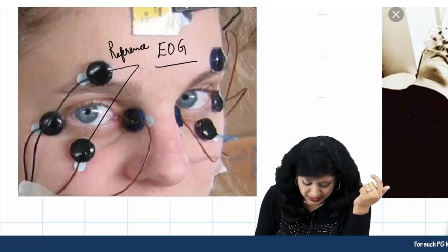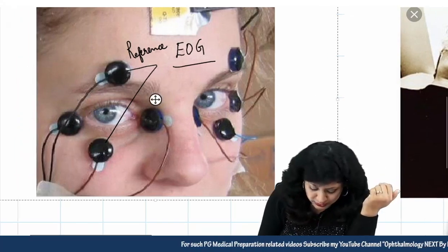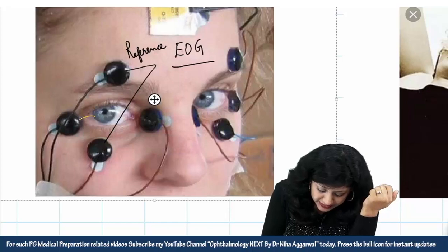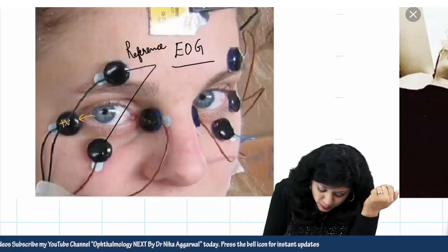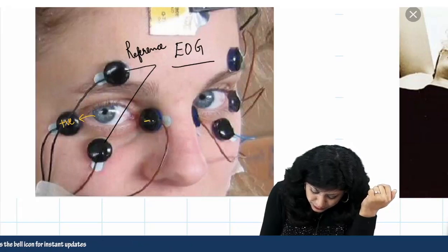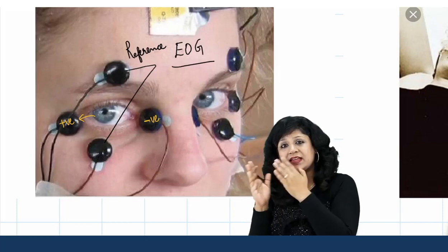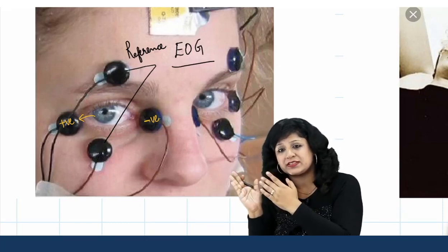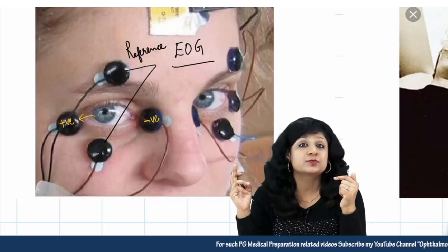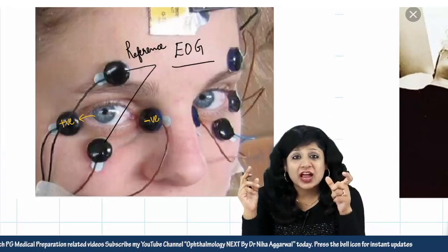So what are we doing? We are asking the patient to look at one side. Suppose the patient is looking to this side — the cornea has come up here, so this becomes positively charged, and the macula will be coming here, so this will become negatively charged. When the patient is looking in one gaze, the cornea fixates toward that side, so that side electrode will become positively charged and the other electrode will become negatively charged.